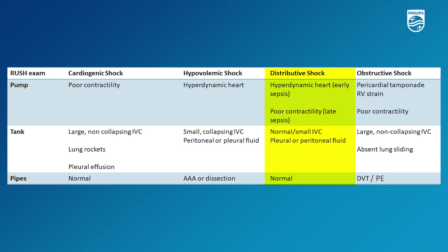In the case of distributive shock, sepsis is the most common cause, primarily due to vasodilation. The heart may try to compensate early by being hypercontractile or hyperdynamic; however, as sepsis progresses that contractility may decrease. The IVC may be normal or slightly decreased if there is concomitant dehydration, and examination of the large vessels will also be normal.